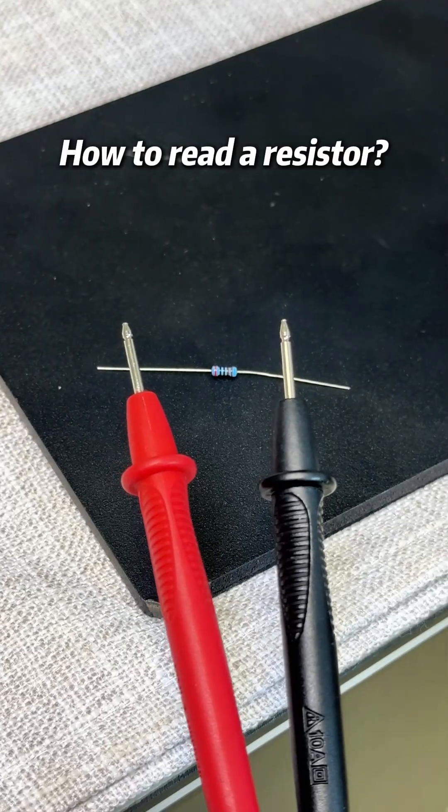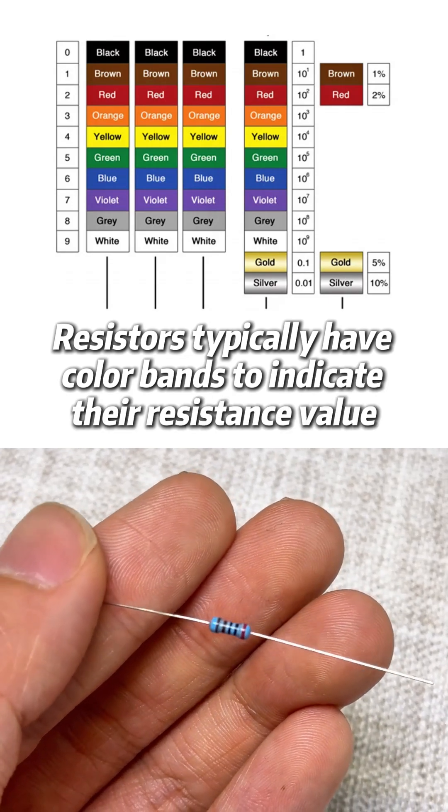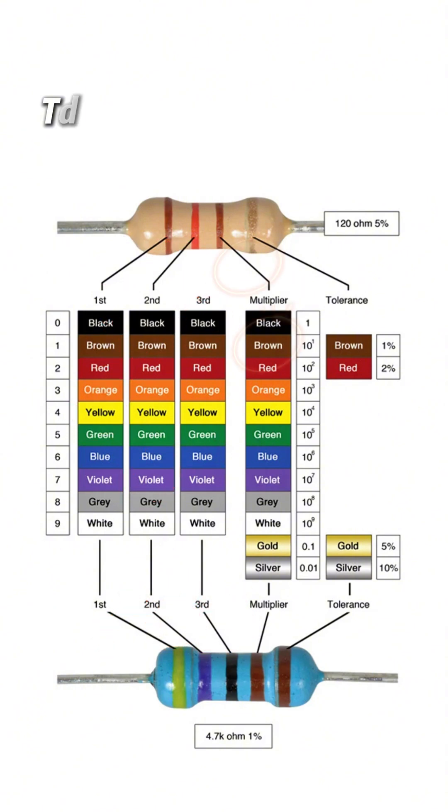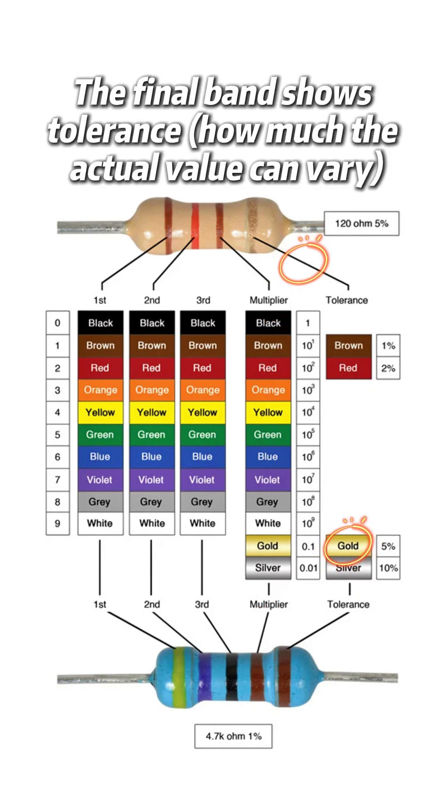How to read a resistor? Resistors typically have color bands to indicate their resistance value. The first two bands represent digits. The third band indicates a multiplier. The final band shows tolerance.